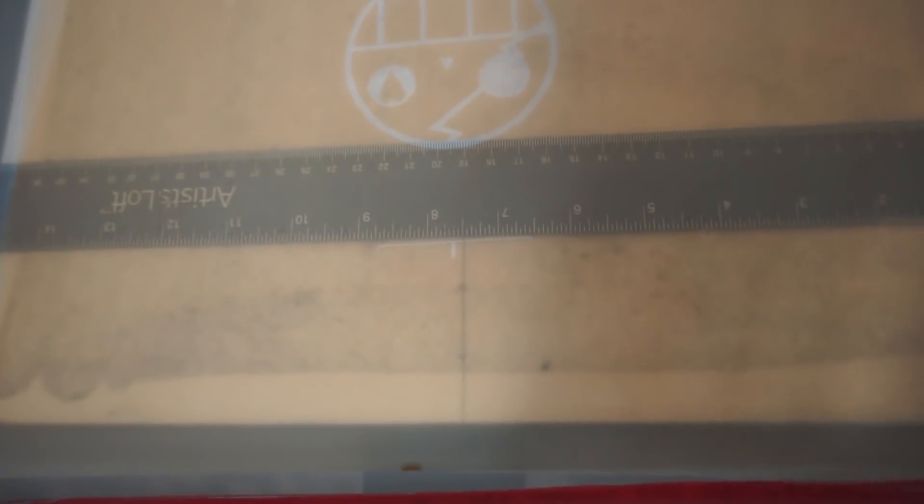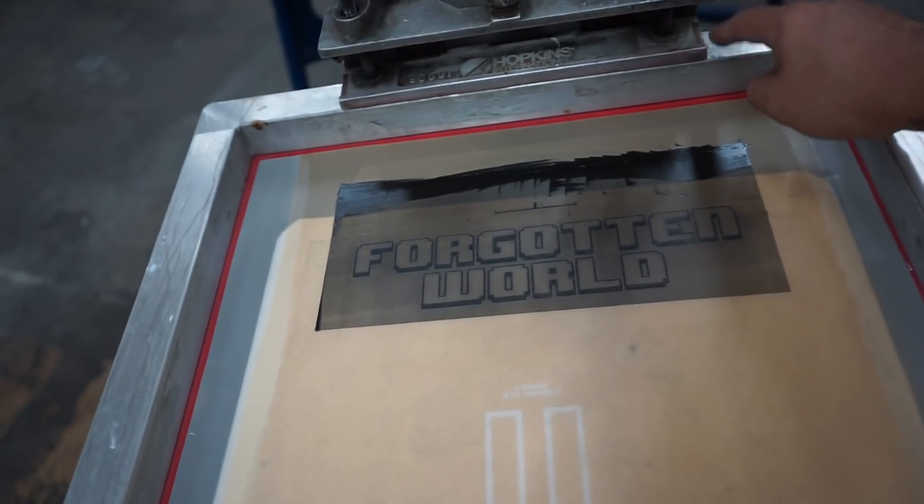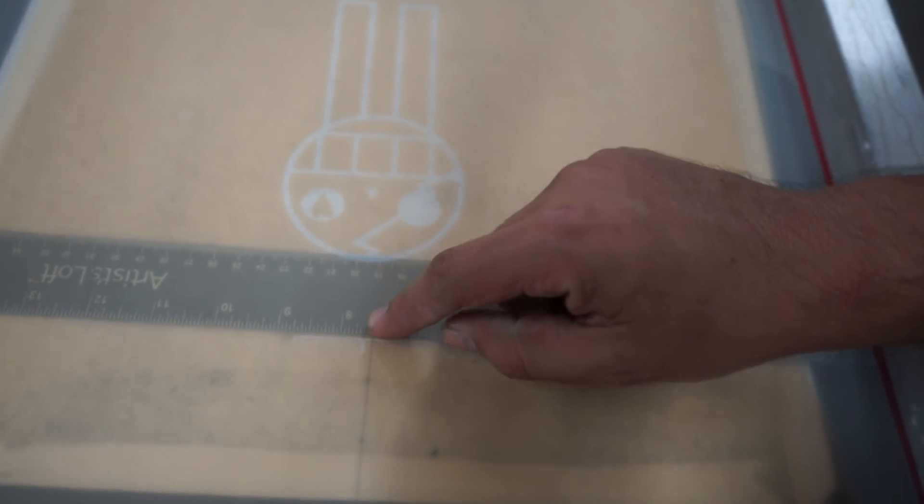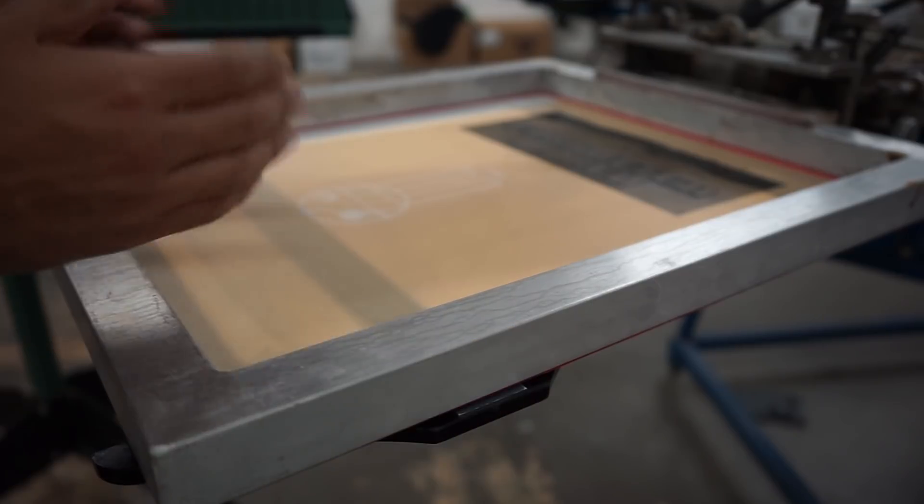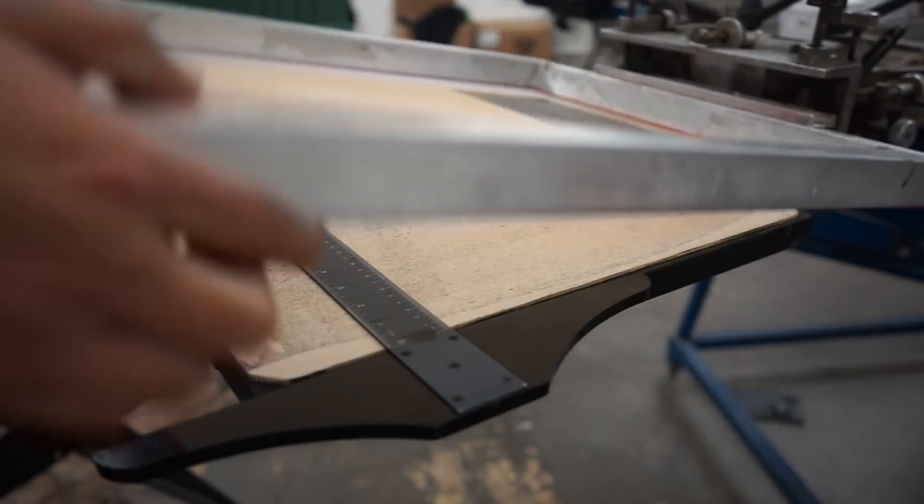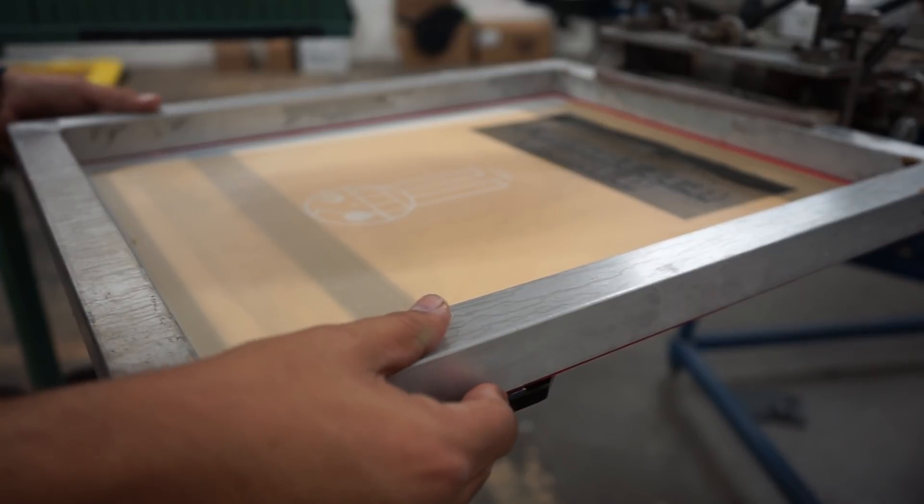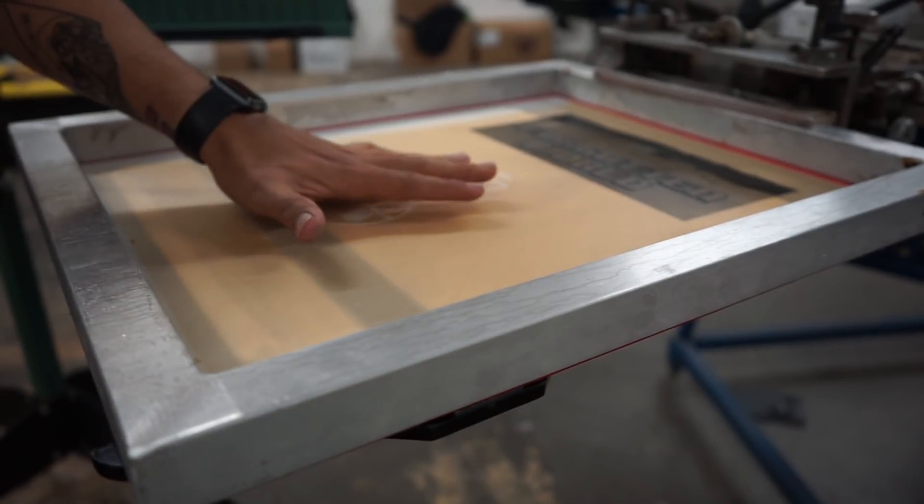When you put it too far out, as you tighten it, you can move the screen and it'll move out of place, or even when you're moving your screens around the machine, you can shift it just a little bit. We want to make sure we have a firm grip first of all, then the second thing we're going to do is bring our t-square to the registration mark. We got the registration mark right at the t-square and we have a firm grip on the back.